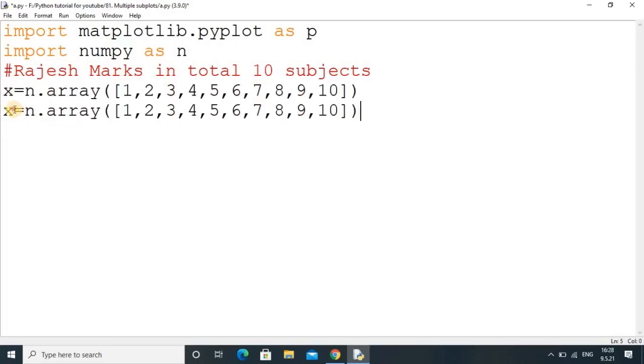Then I will add the marks in the second array. The second array will be y. Suppose in the first subject out of 100 he got 10 marks. In this way, whatever the marks are, you can put them. These are the marks in the 10 subjects.